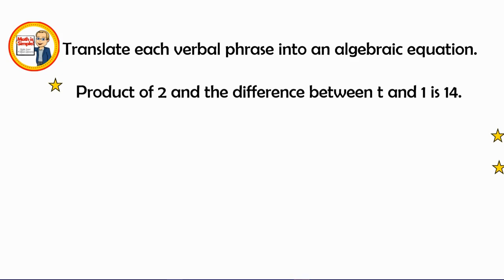Our first phrase says the product of two and the difference between T and one is 14. We learned that product means multiplication. Of means multiplication as well. So I could use a dot or I could use an X, but I would prefer a dot or parentheses. The reason why is because we normally use X as a variable, and we don't want to get too confusing. We've learned that is, anytime we see is, that means equal.